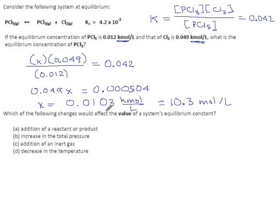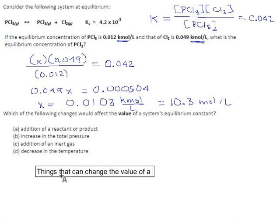Which of the following changes would affect the value of a system's equilibrium constant? Here's a list of things that can change an equilibrium constant: adding reactants and products does not matter, changing the pressure does not matter, changing pressure by pumping in inert gas does not matter. The only thing that affects K is if you heat it up or cool it down.